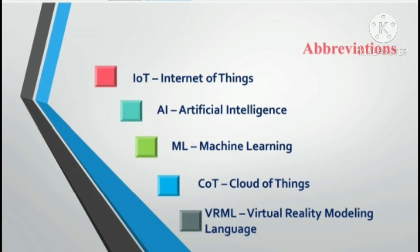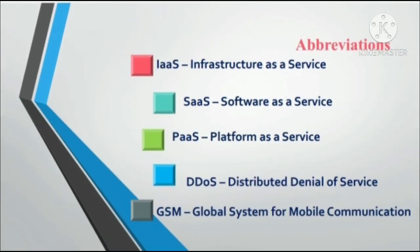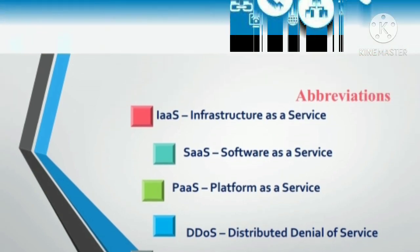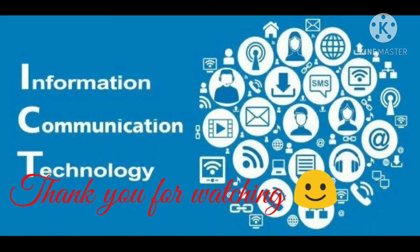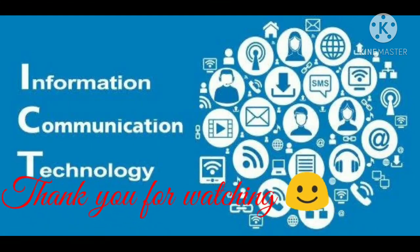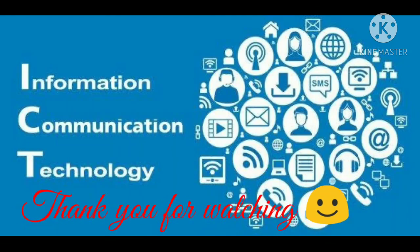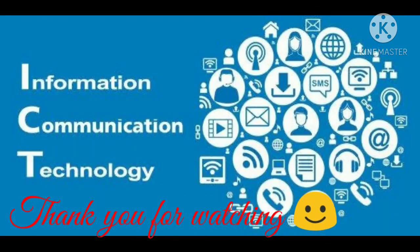IoT: Internet of Things. AI: Artificial Intelligence. ML: Machine Learning. COT: Cloud of Things. VRML: Virtual Reality Modeling Language. IaaS: Infrastructure as a Service. SaaS: Software as a Service. PaaS: Platform as a Service. DDoS: Distributed Denial of Service. GSM: Global System for Mobile Communication. The abbreviation part of ICT has been covered here, so you will get one mark for sure if you have studied all those abbreviation parts thoroughly. Thank you for watching.